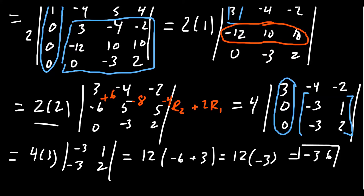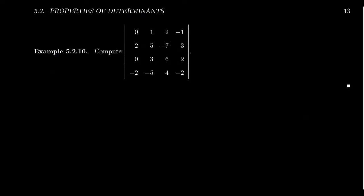I just want to mention this calculation was done a little differently than the book — feel free to look at the alternative approach there. I just did more row replacements along the way. Let's do one more example, where we combine row operations with the cofactor expansions we did before.